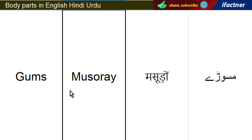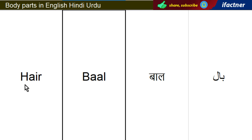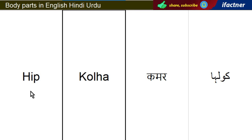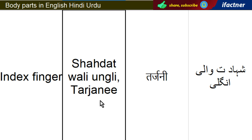Masooday — Gums. Baal — Hair. Haath — Hand. Kolah — Hip. Shahadatwaali ongli, Terjani — Index Finger.